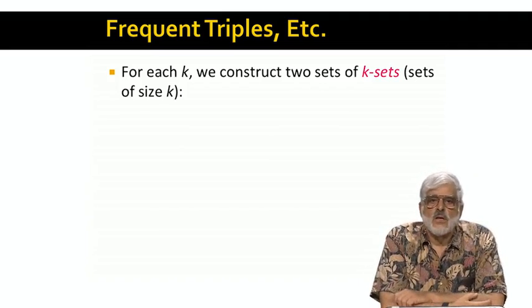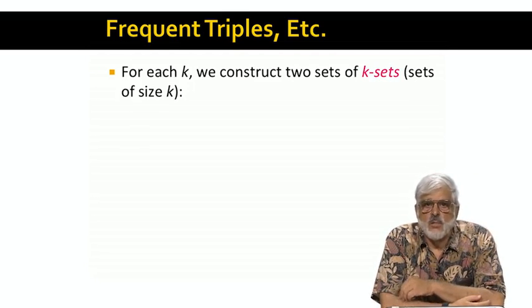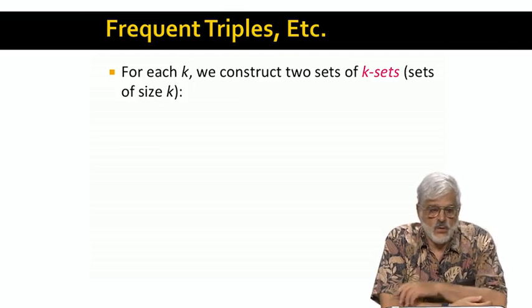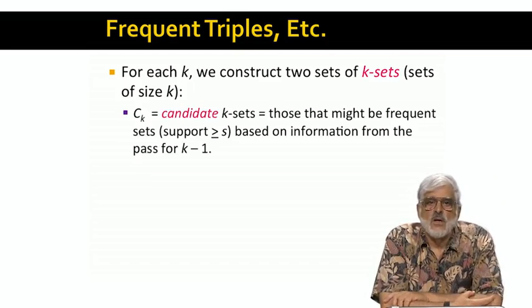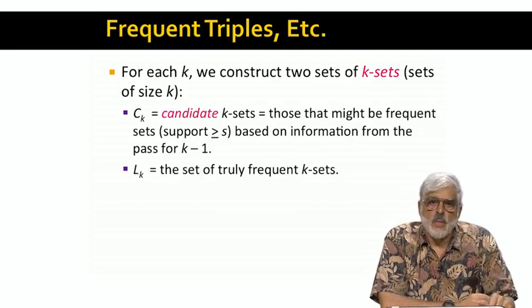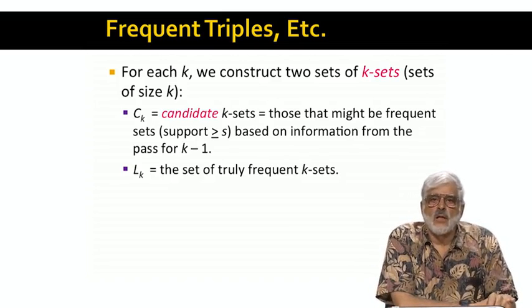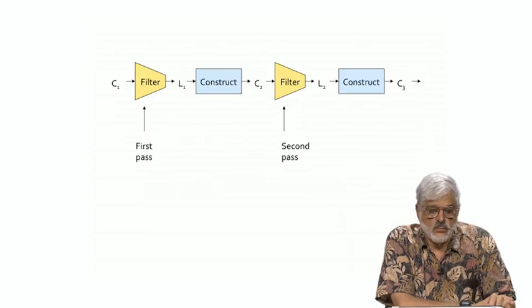The idea used on the second pass extends to later passes that construct larger sets. Let's use the term K-set for an itemset with K members. Then there are two collections of K-sets associated with our effort to find all the frequent K-sets. C sub K is the candidate K-sets. These are the sets that, based on what information we have from previous passes, might be frequent. At least we can't rule out the possibility of that being frequent by using monotonicity, so we have to count them. And then, the result of the Kth pass, we'll call L sub K. This is the subset of C sub K, consisting of those K-sets that are found on the Kth pass to be really frequent.